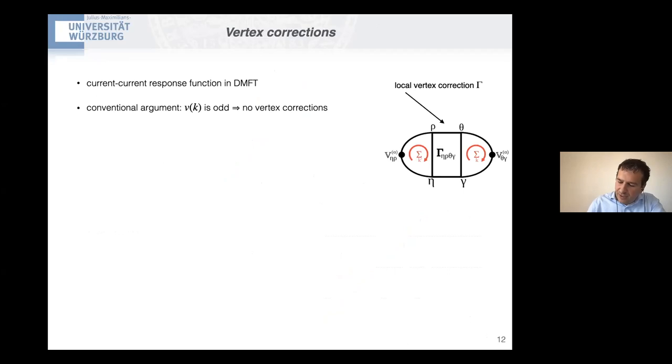So for a little bit on the technical side, since also Philip talked about vertex correction, you know, of course, that in current current response function in the DMFT, we have an exact cancellation of vertex corrections coming from the fact that the velocity in the conventional case is an odd function of the momentum. And therefore, the local vertex here makes the two sum over momentum completely independent, and you can cancel any vertex correction of this kind. You may, however, wonder how this works in these systems, because now the Hamiltonian is linear in K. So the velocity is constant in momentum. And therefore, this argument would not apply anymore. Does this mean that we get vertex corrections back in the optical conductivity?